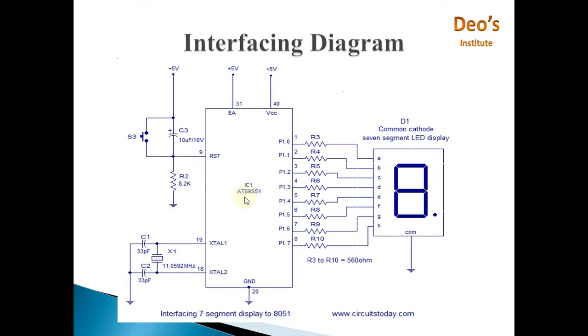This is the interfacing diagram of 7 segment LED with 8051. Here S3 is a reset button and this is the circuit for reset operation. This circuit is for providing clock input.